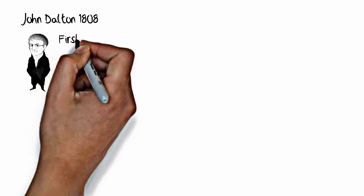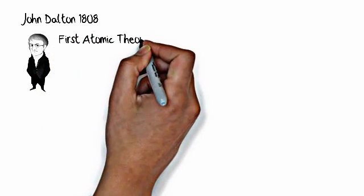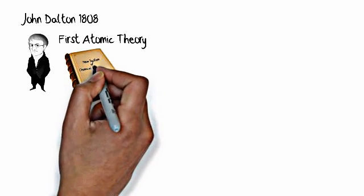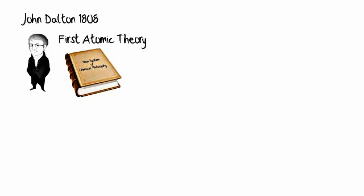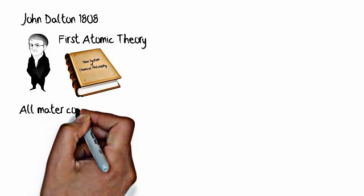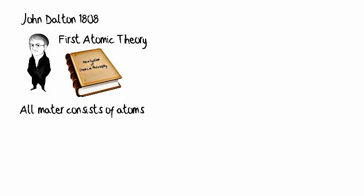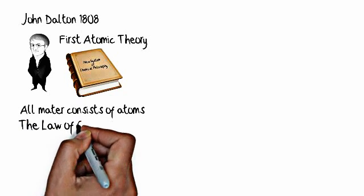In 1808 John Dalton gave us the first atomic theory. It was published in a book entitled The New System of Chemical Philosophy and in it he laid out the first scientifically based atomic theory. It consisted of five parts. First that all matter consists of atoms. Everything around us is made up of atoms.